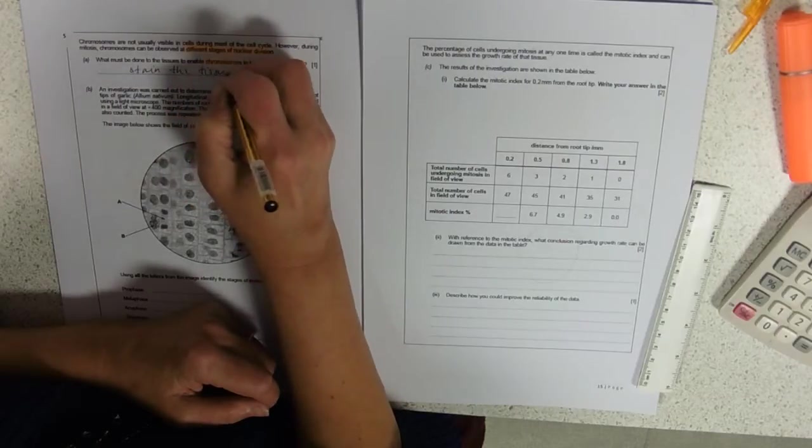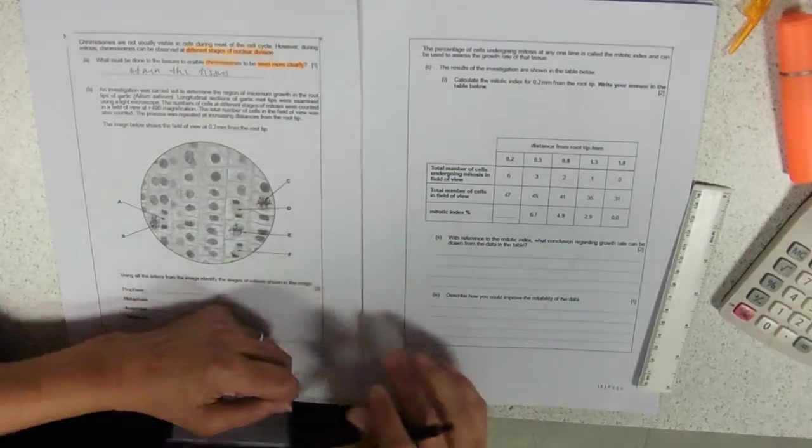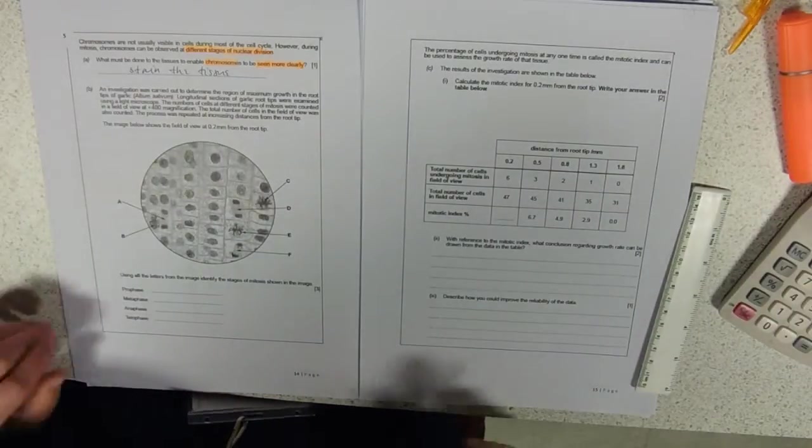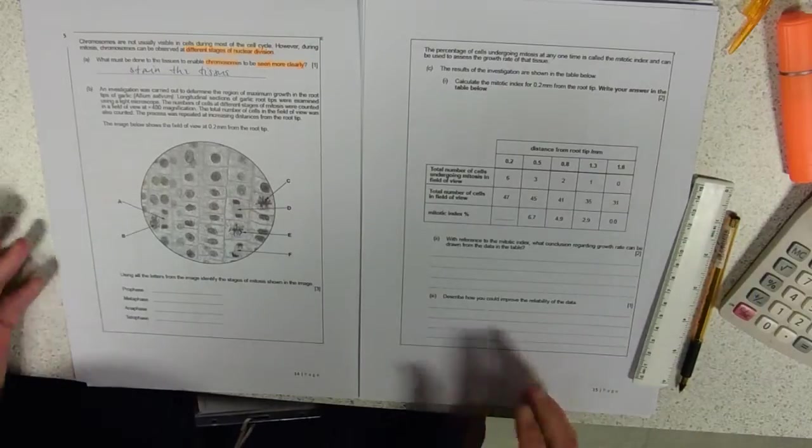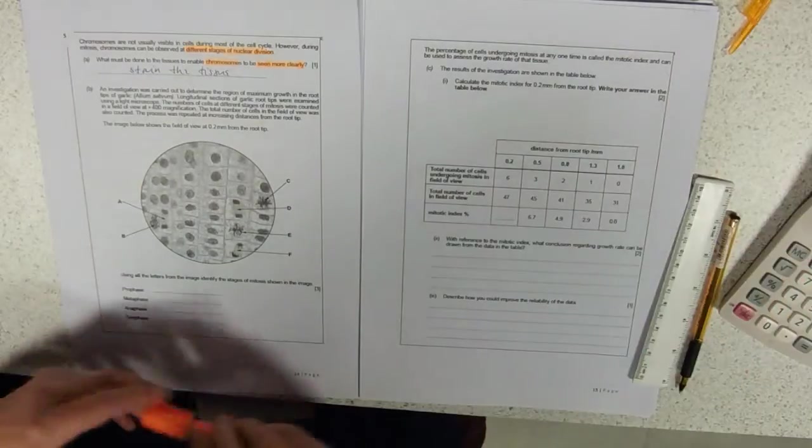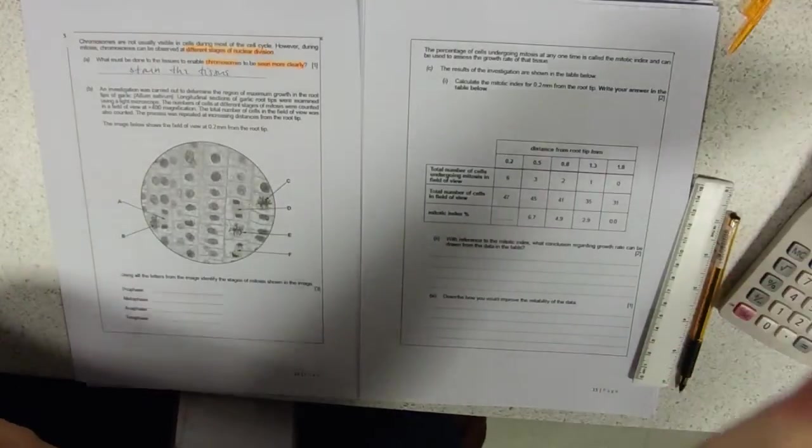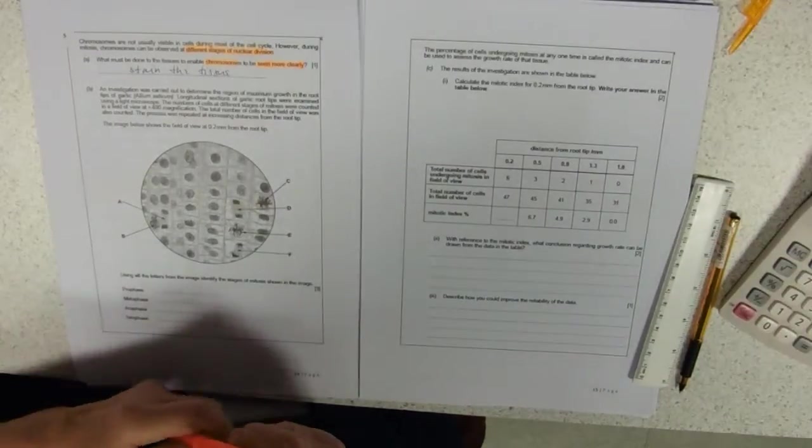what did we need to do? We needed to stain the tissue. And we did it with toluidine blue, you can do it with acetocarmine which gives you a lovely purpley red colour. But the point is, it's a stain, it's not a dye, you dye your hair, you don't dye tissues.